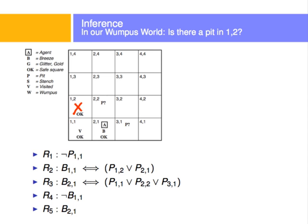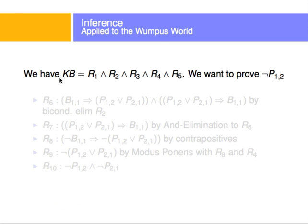I want you to copy these rules because we'll be referring to rule 1, 2, 3, 4, 5, etc. So we have knowledge base R1, R2, R3, R4, and R5 — the conjunction of all five rules. I want to prove that there's no pit in 1,2 — basically that NOT P1,2 is true.